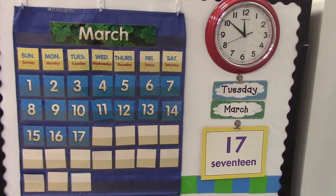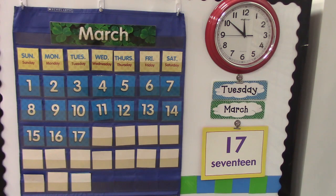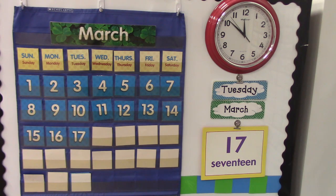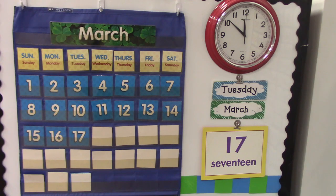Good morning. Today is Tuesday, March 17. Can you find the 17 on the calendar? It's under the Tuesday column. So far we've had three Tuesdays in March: the 3rd, the 10th, and today the 17th.